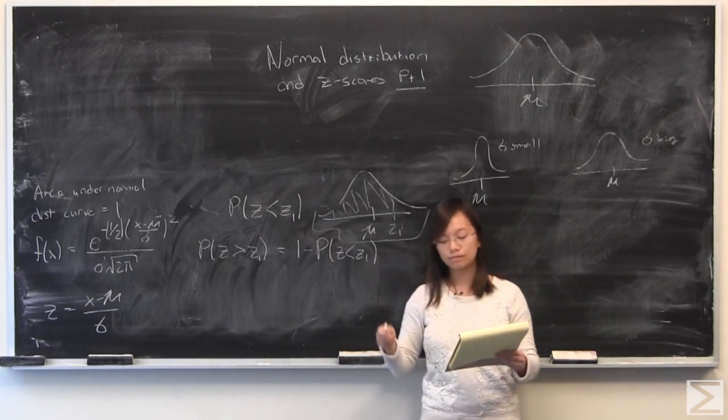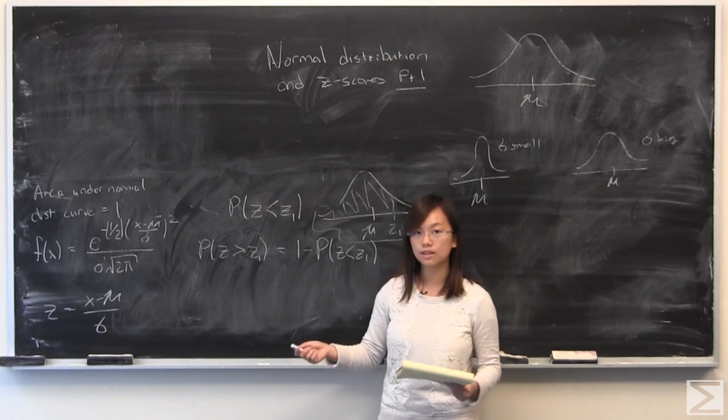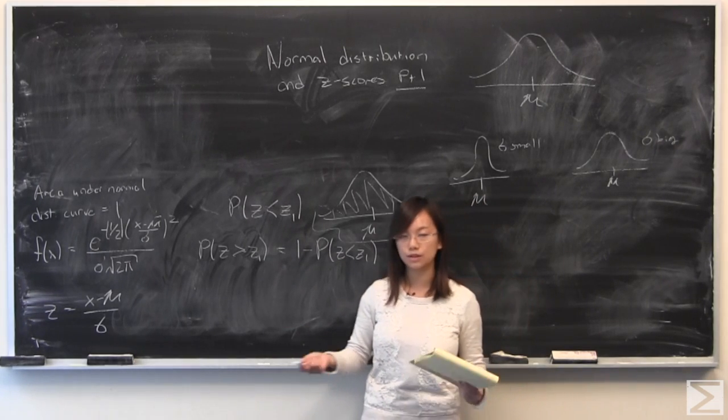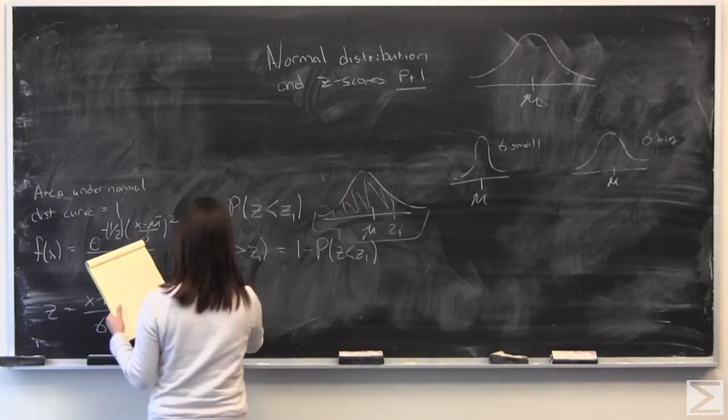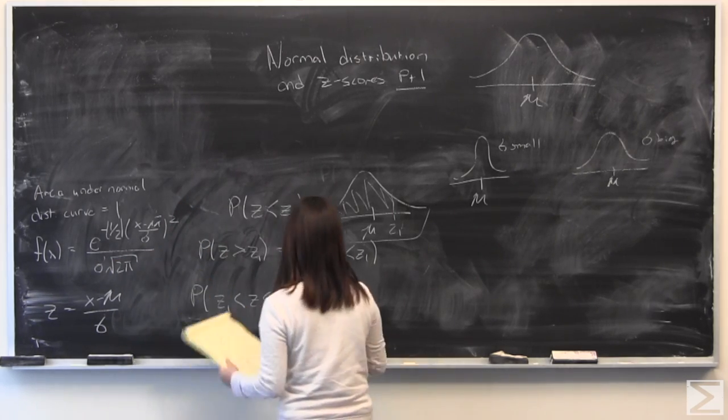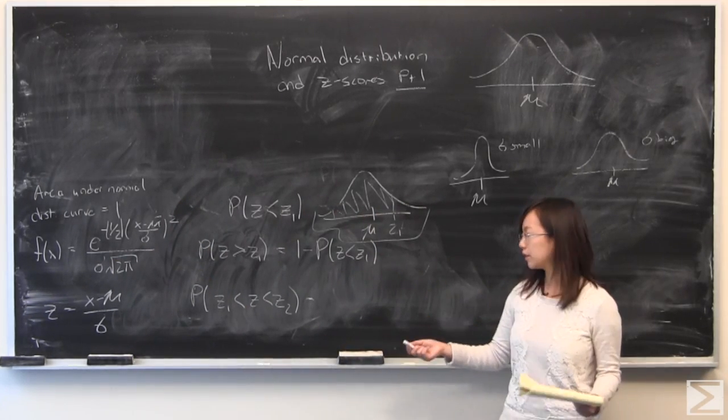And for the third kind of question that's often asked is the probability of finding z between two z-values, z1 and z2.